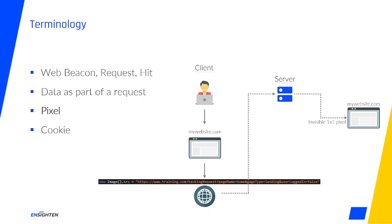The pixel is an invisible one-by-one-sized image because it's not actually the important part. It's not intended to ever be visible to the end user or affect your page in any way. It's important to know this terminology because almost all tagging exists to generate or assist in generating requests for one reason or another.